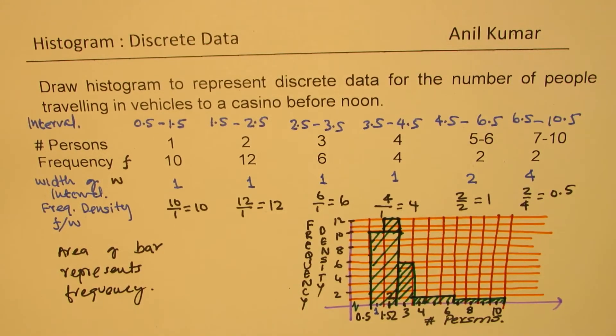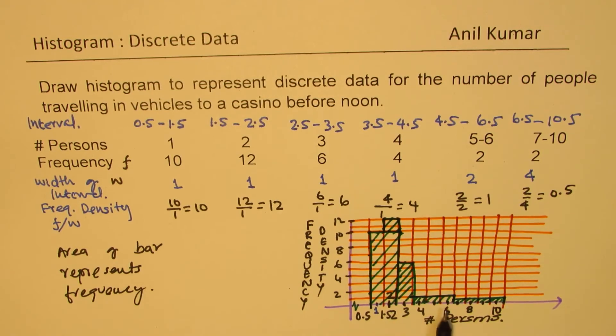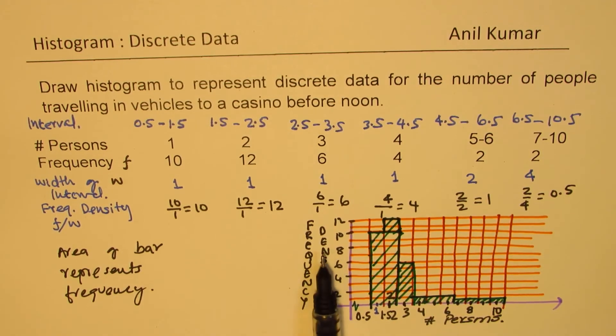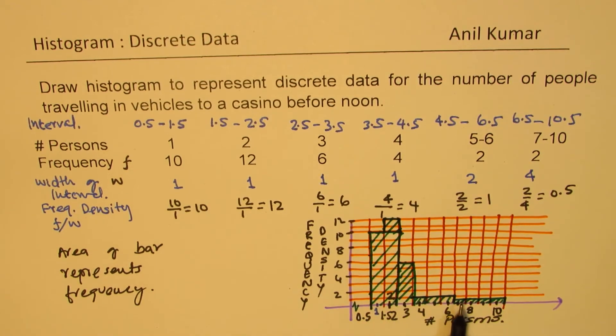Perfect. So that is how we are going to sketch it. So it is important to understand that these number of persons will be along the x-axis, frequency density along the y-axis, and we chose an interval to make the whole data continuous, so that between the bars, we have no gaps.